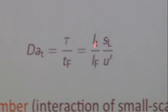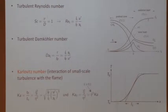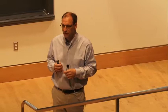In premixed combustion, we often use the Damköhler number. For non-premixed combustion, the Damköhler number is not that relevant, because the interaction of the large scales of turbulence has some relevance but not so much for the actual physics. What's more important is how the small scales interact with the flame.